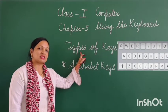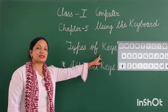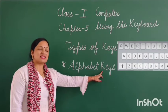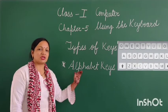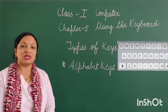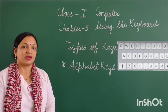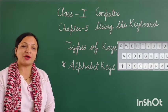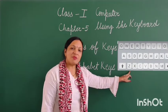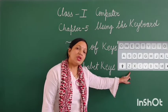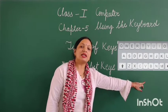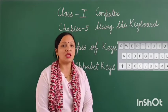Our topic is types of keys. Number 1 is alphabet keys. Alphabet means English letters - A, B, C, D, A to Z. These are all alphabets. So the keys that have alphabets printed on them are called alphabet keys. These run from A to Z, but not in order.